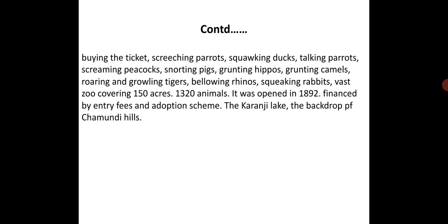Continuing the jotted points: buying the ticket at the zoo. In the zoo, I saw screeching parrots, squawking ducks, stalking parrots, screaming peacocks, snorting pigs, grunting hippos, grunting camels, roaring and growling tigers, bellowing rhinos, squeaking rabbits. The zoo covers 150 acres, has 1,320 animals, was opened in 1892, financed by entry fees and an adoption scheme. There is the Karanji Lake and the backdrop of Chamundi Hill. These are all the points I jotted down after selecting the topic.